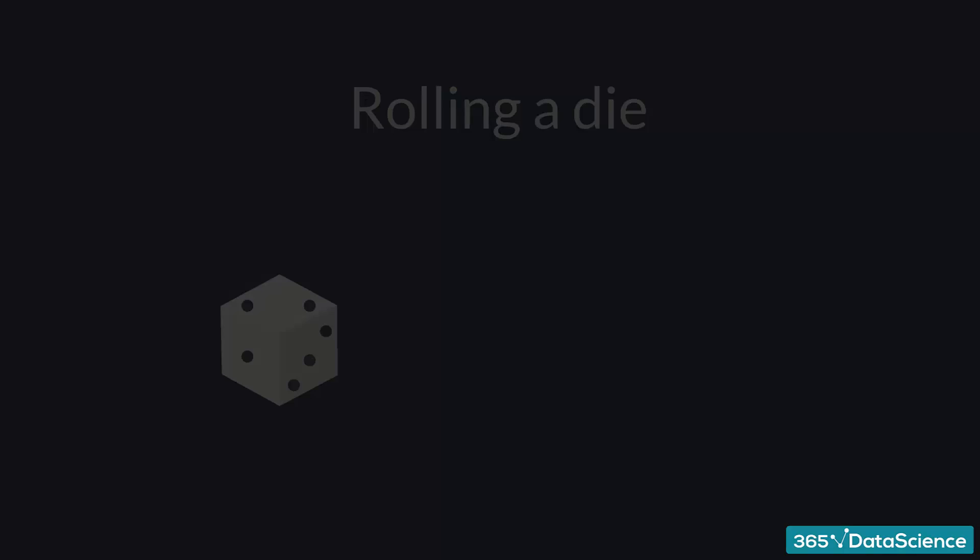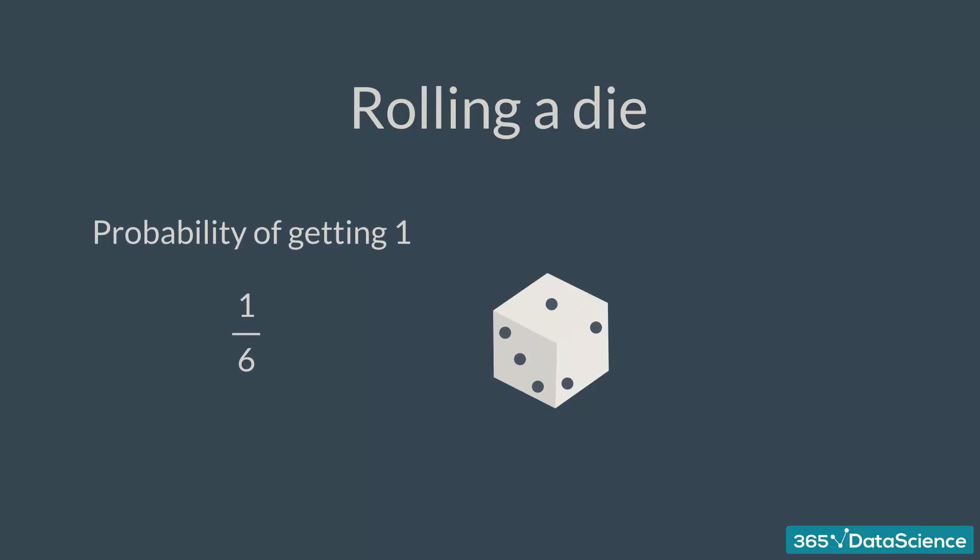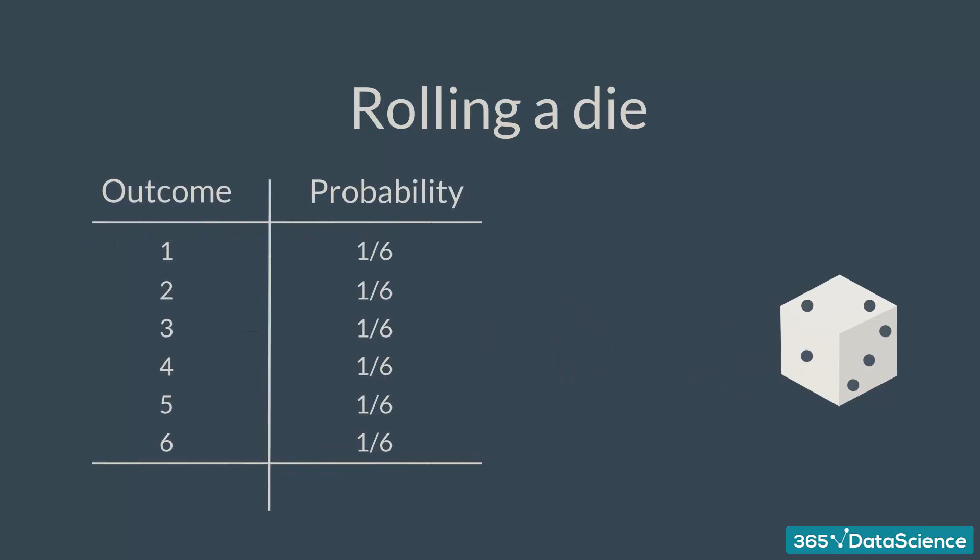Think about a die. It has six sides, numbered from one to six. We roll the die. What is the probability of getting one? It is one out of six, so one-sixth, right? What is the probability of getting two? Once again, one-sixth. The same holds for three, four, five, and six.